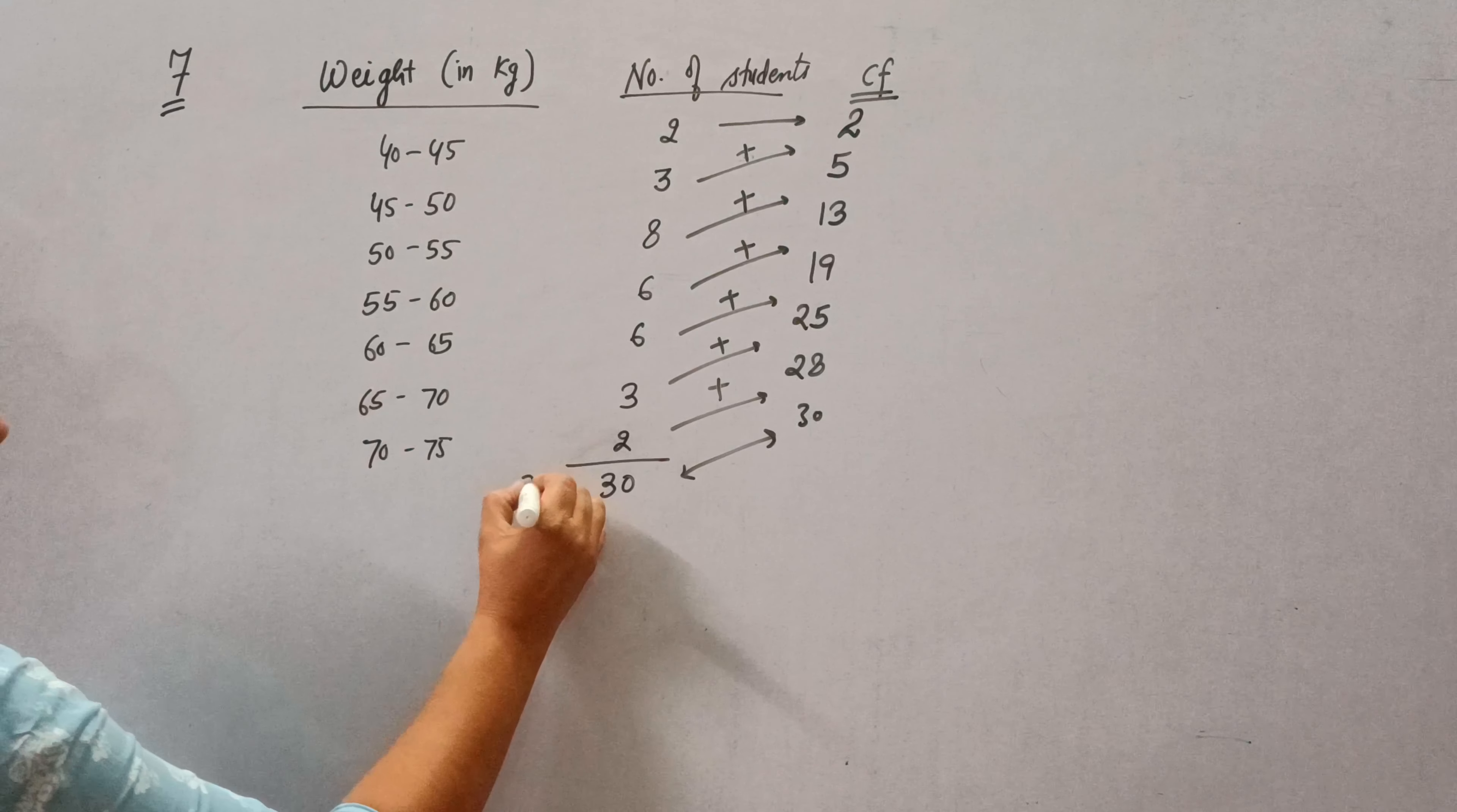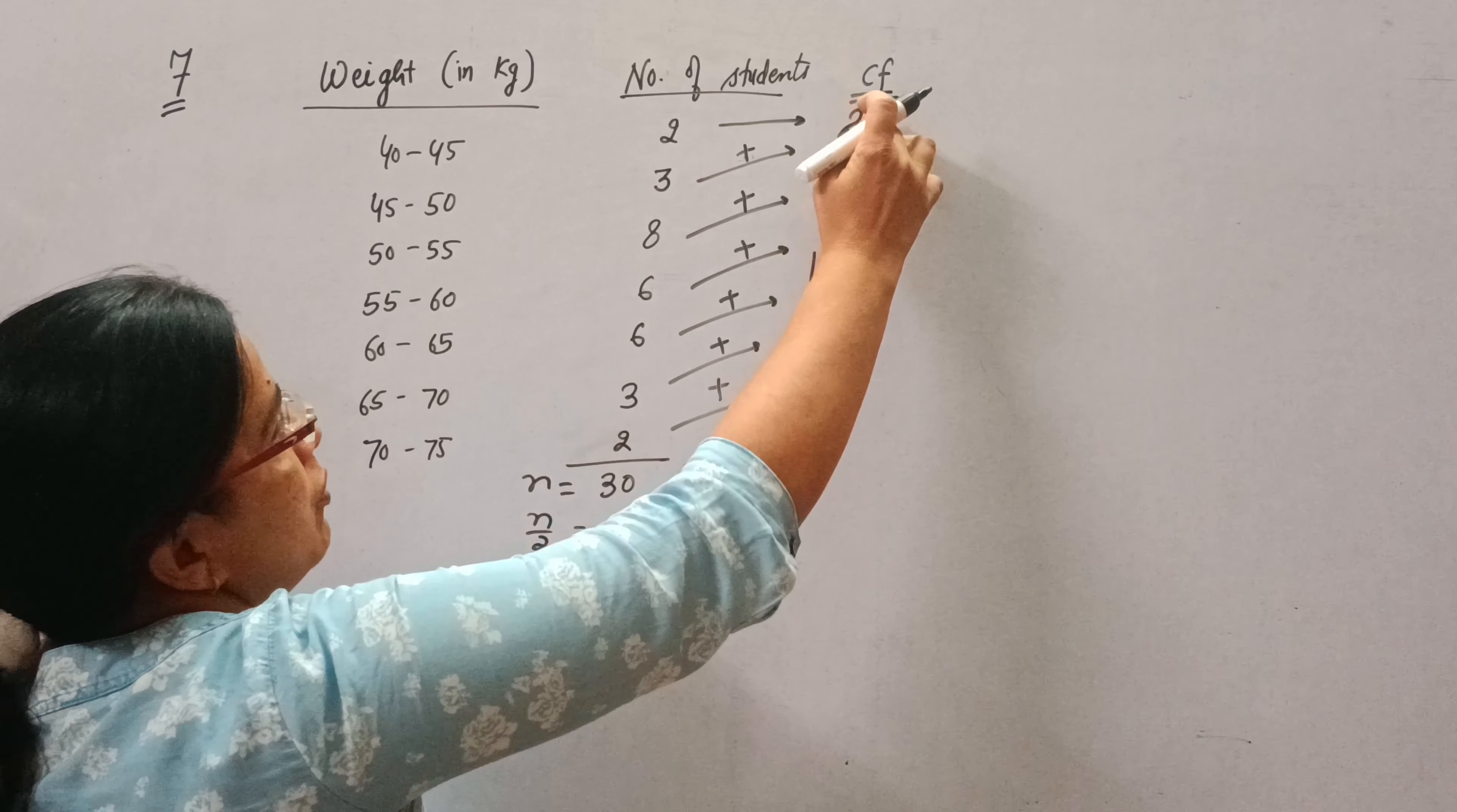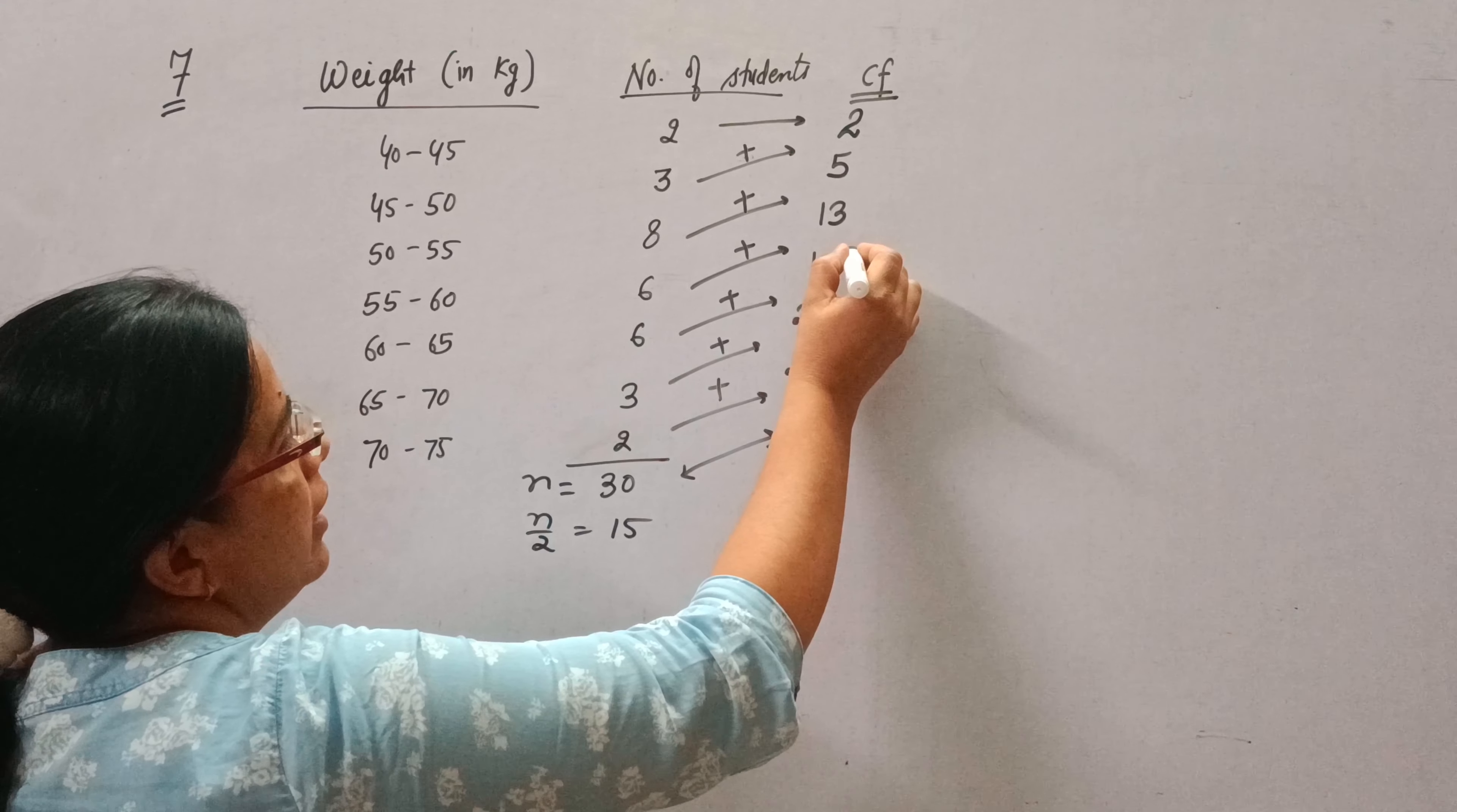Now n is 30, so n by 2 will be 15. Next step is to find the median class. So see, this n by 2 is 15. This 15 is more than 2, more than 5, more than 13, but less than 19.